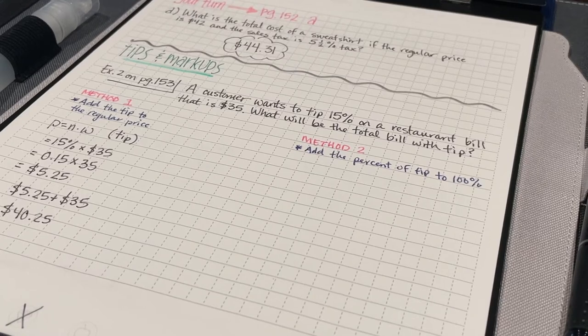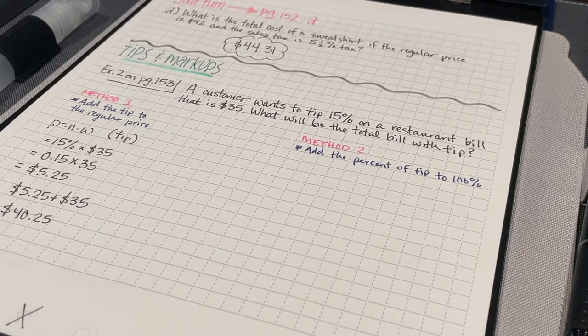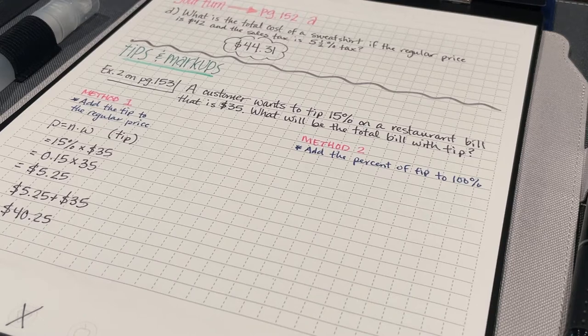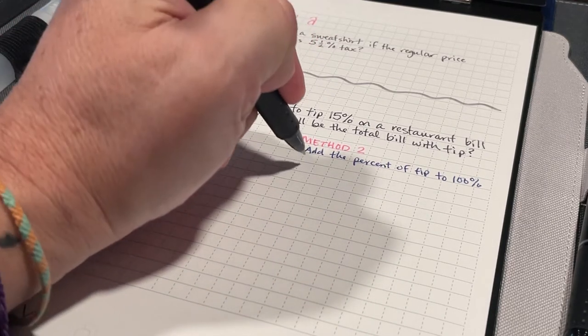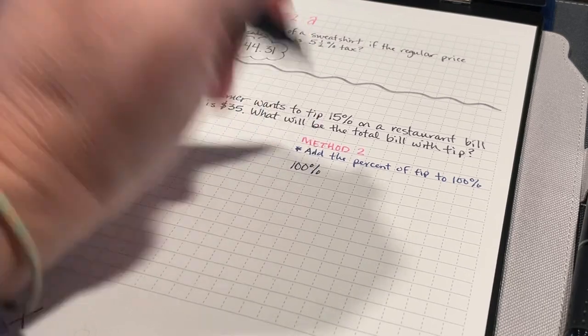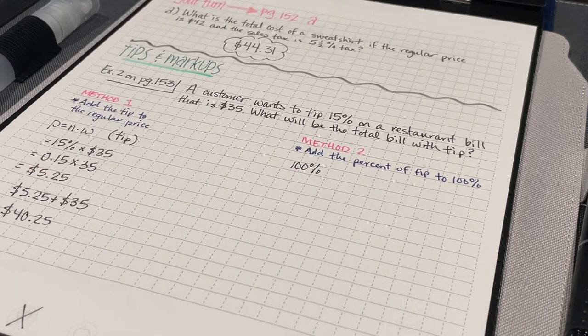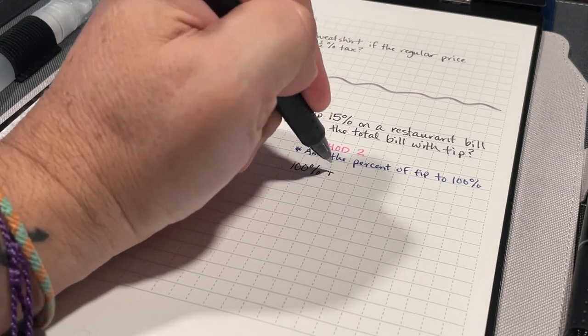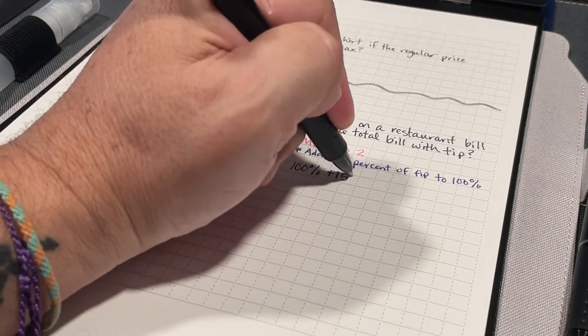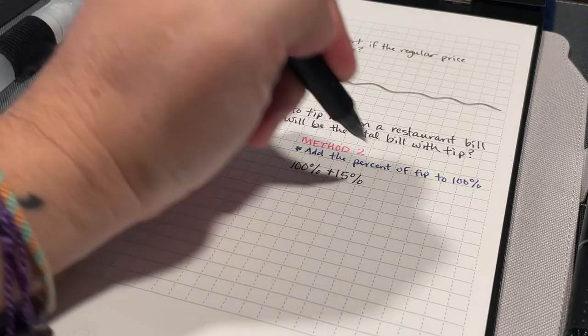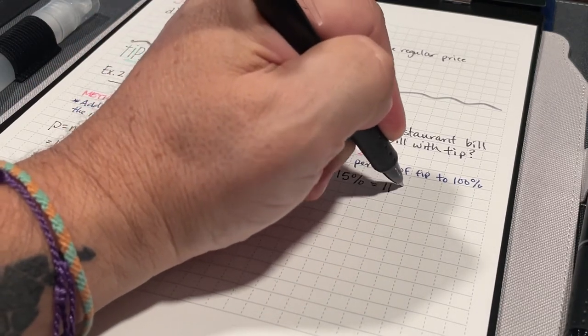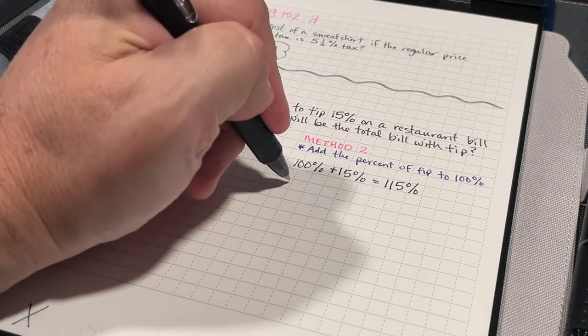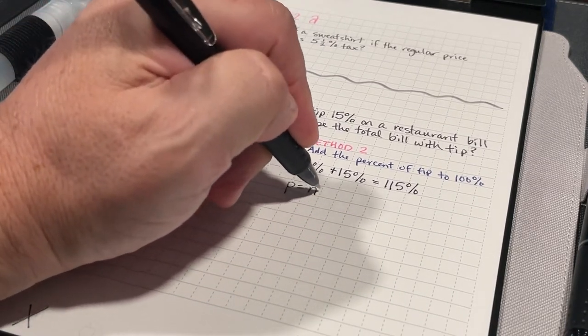Now, I want to look at the same problem, but with a different method. I'm going to add the percent of the tip to 100%. I've got 100%. That's the 100% of the cost of the meal, which was $35. And then I'm going to add 15% to that. That's going to give me a total of 115%.